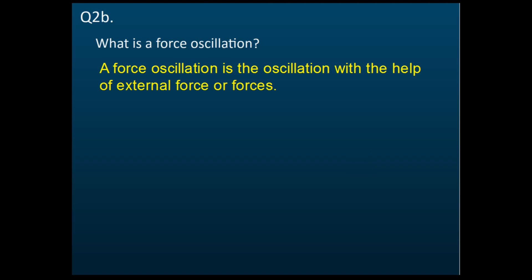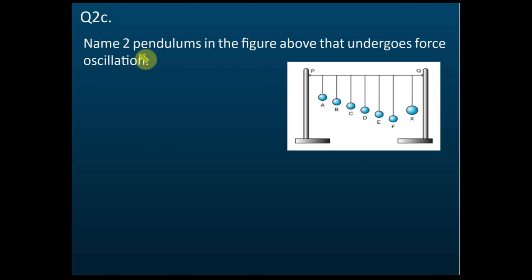Forced oscillations are oscillations with the help of an external force. The question asks you to name two pendulums that undergo forced oscillations. Any two from A to F are correct, because from A to F all undergo forced oscillations — the external force comes from X. So it can be A and B, or A and C, or B and D — any two from A to F. Note that X is the driver pendulum; it gives force to the others, so X does not undergo forced oscillations.